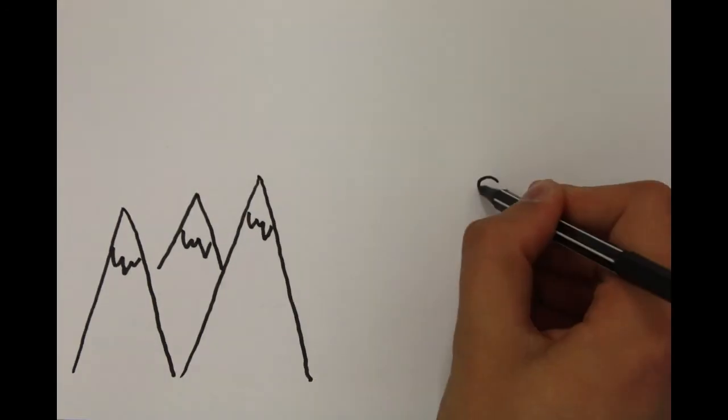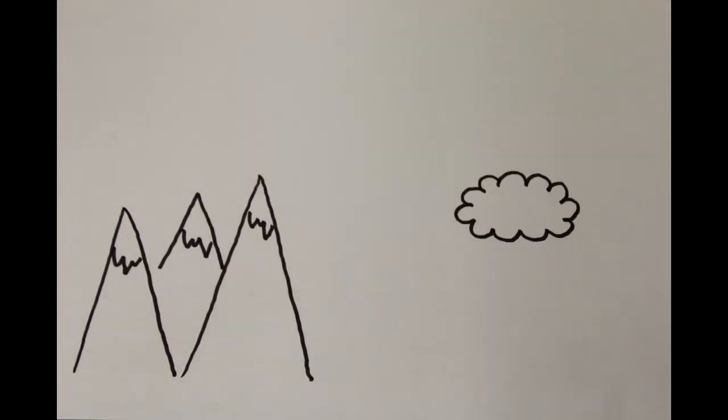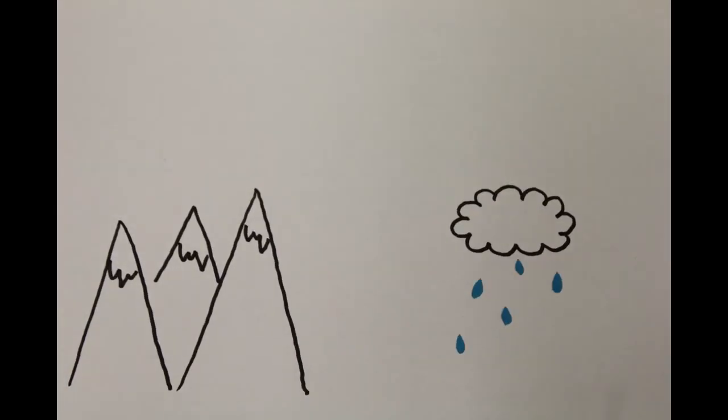Other components of the brown clouds have a cooling effect, such as the nitrate and sulfates. This effect, which is known as surface dimming, causes less water to evaporate from the oceans.